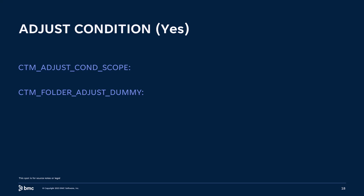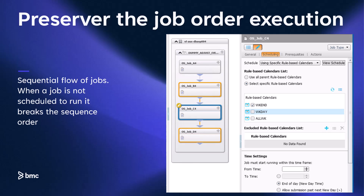So far we have discussed the adjust condition feature with system parameter CTM adjust condition scope. Now we will discuss another use case and apply system parameter CTM folder adjust dummy. In the third use case, we have a simple flow with four jobs being executed sequentially. We can see that job C4 runs on weekends, but not on weekdays. When ordering the folder on a weekday with adjust condition set to yes on the folder, job D4 will be able to run even though job C4 is not ordered. With scope set to group, the event job D is waiting for generated by job C4 will be deleted. Or if the scope is set to AJF, the run criteria will ignore the event that would have been generated by job C4, and the folder will run to completion.